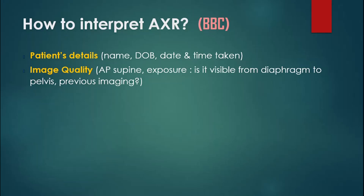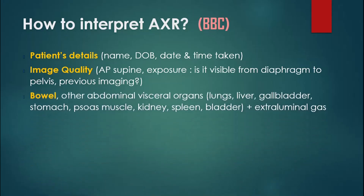Then you get into the first B, which is bowel. You want to look at the small bowel and the large bowel. After that, look at other abdominal visceral organs as well — lungs, liver, gallbladder, stomach, the psoas muscle, kidneys, spleen, and the bladder. Then look at extra-luminal gas: if you notice any air under the diaphragm or any pneumoperitoneum, you want to mention that as there is a risk of perforation.